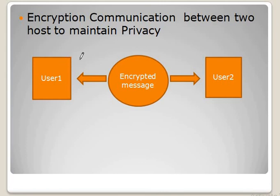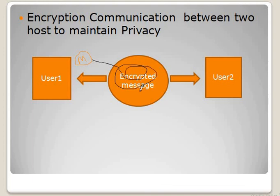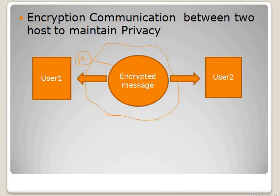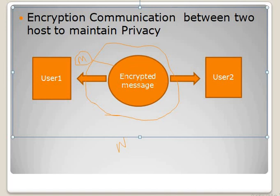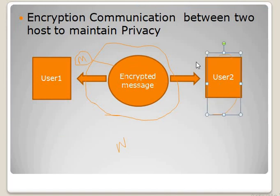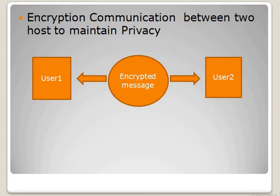The first user writes a message, then that message is encrypted and sent to the other user. When it travels on the network, it is in an encrypted form. When the receiving user gets that message, they decrypt it to see the original message. This process is the basis of cryptography, which we will cover next.